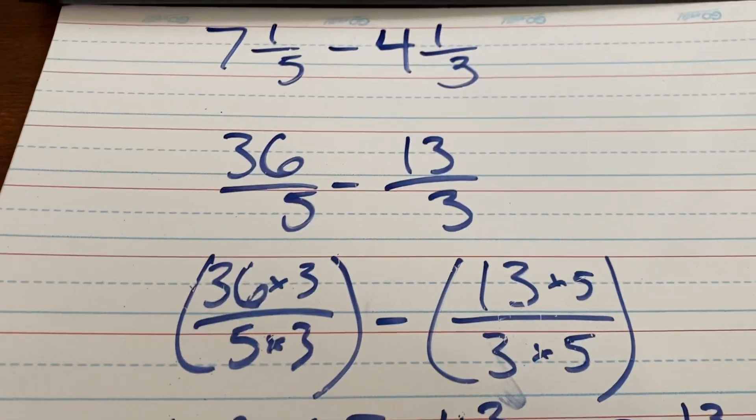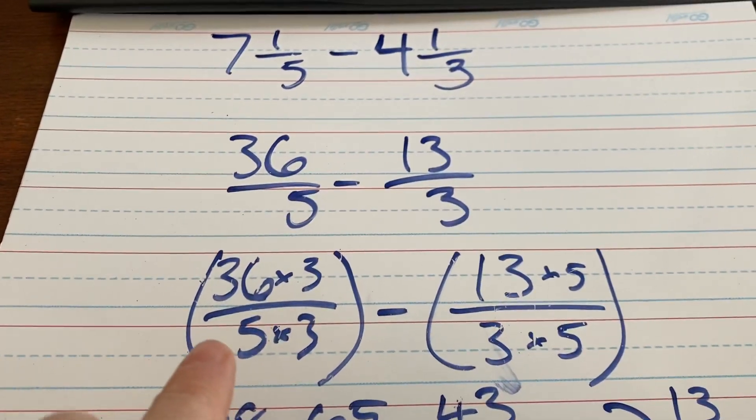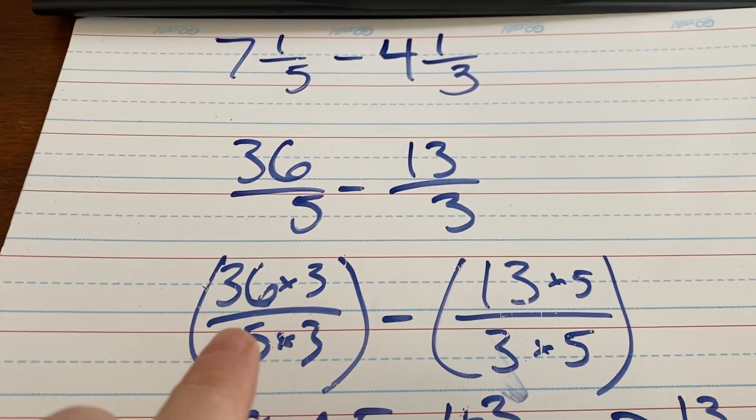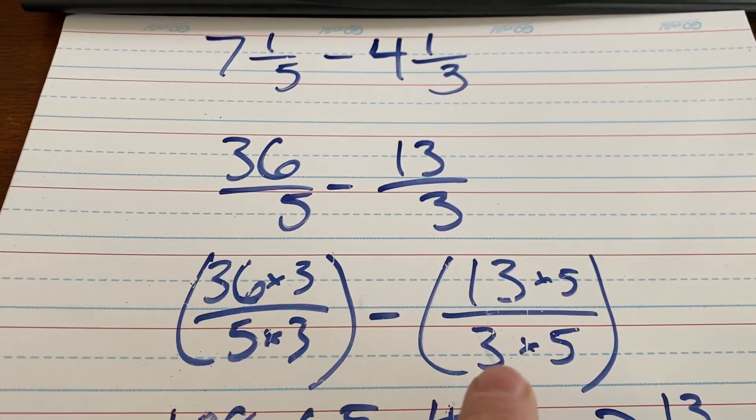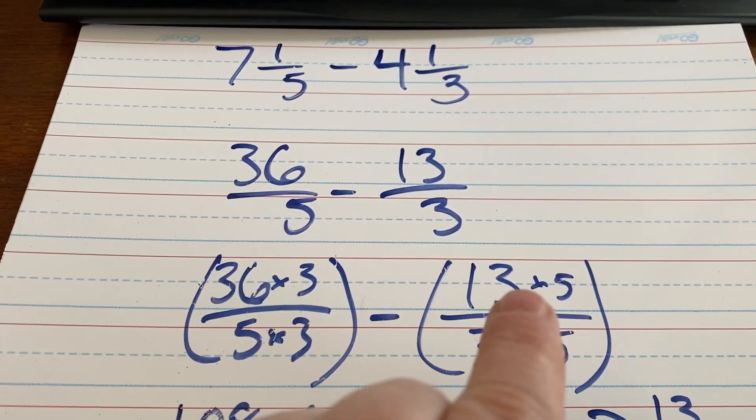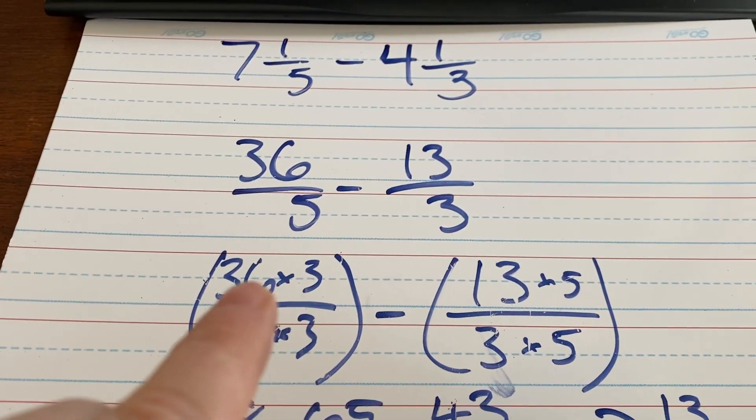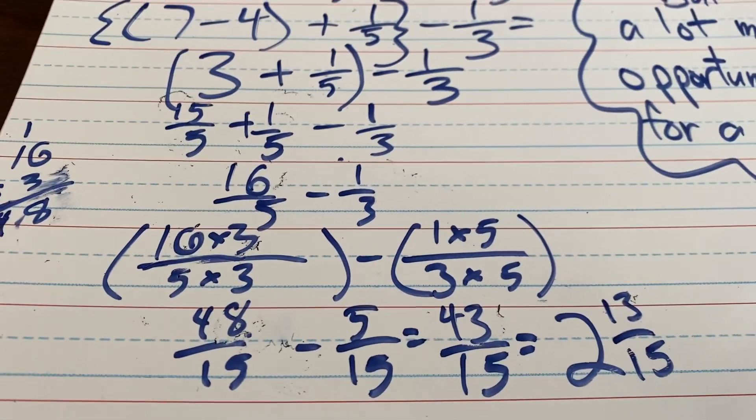Then, your common denominator, the least common denominator between 5 and 3 is 15. So, here we go. 36 times 3, 5 times 3, minus 13 times 5 over 3 times 5. I know this requires you to do a little bit extra with multiplication, but I feel more confident having you guys do 36 times 3 than all that other nonsense.